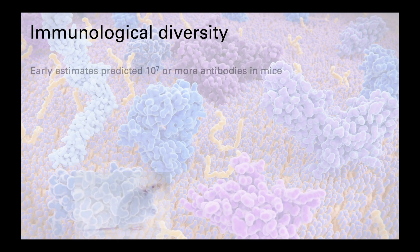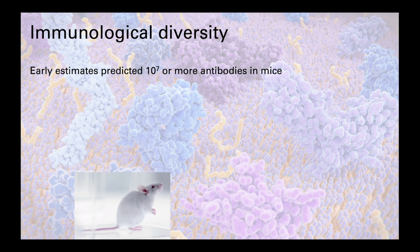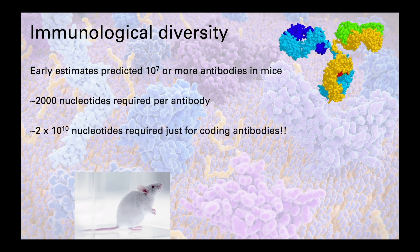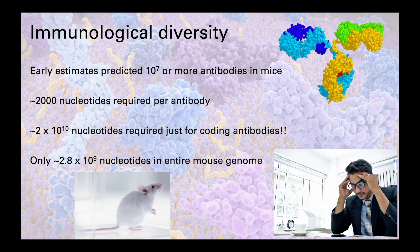immunologists quickly realised that there wasn't enough capacity within our cells to encode all the potential combinations of receptors. Early predictions suggested about 10 to the 7 antibodies were present in mice, which is actually a vast underestimate. But even then, if approximately 2,000 nucleotides are required to encode an antibody, the mouse would need around 2 times 10 to the 10 nucleotides just to encode its antibodies. Yet the entire mouse genome is only around 2.8 times 10 to the 9 nucleotides in total. So something doesn't add up and there must be another process underpinning this diversity.